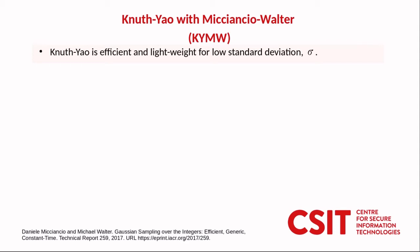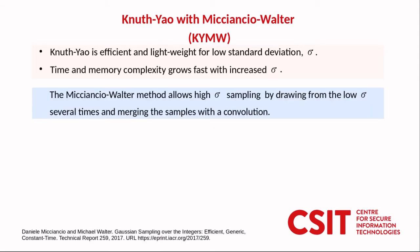Despite the fact that Knuth-Yao is efficient and lightweight for low standard deviation, the time and memory complexity grows as standard deviation is increased. So to get around this the state of the art method is to use the Knuth-Yao algorithm in conjunction with the Miccianchio-Walter method for convolution. This allows you to draw several samples from low standard deviation and combine them to a sample with higher standard deviation.